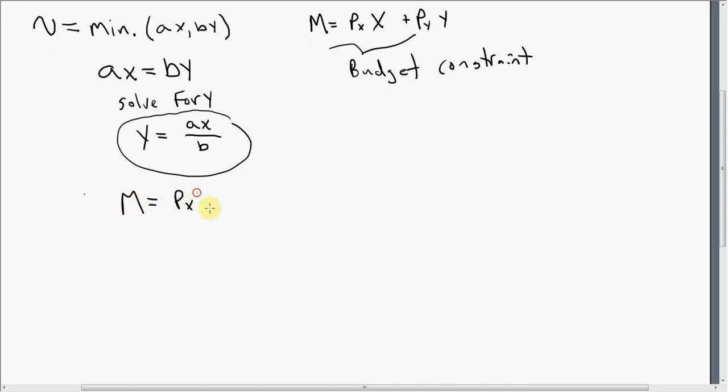The next step is simply to take this result and plug it into the budget constraint. So here's the budget constraint. And for good y, now I'm just going to substitute in ax divided by b. Next thing I want to do is I want to factor out an x term on the right-hand side. And we get something like that. So I just factored out an x term on the right-hand side.